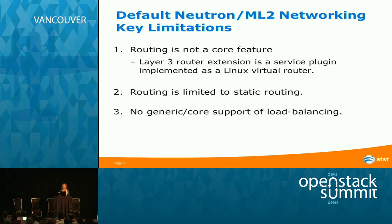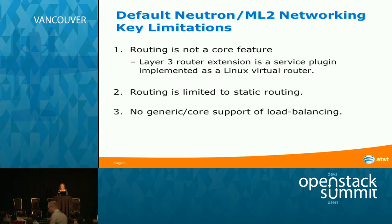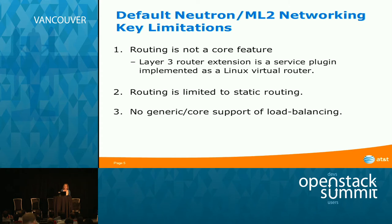The ML2 networking — default Neutron ML2 networking — has some key limitations pertaining to service chaining, though they are also true for general networking with Neutron. Routing is not a core Neutron feature; it's an extension — a service plugin implemented as a Linux virtual router. Switching is the core function but routing is not, and until it becomes a core function I think there will be a lot of unnecessary complexity.